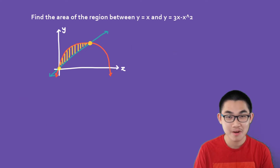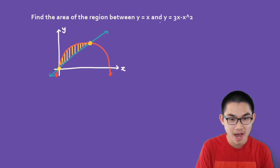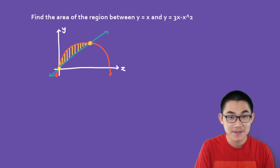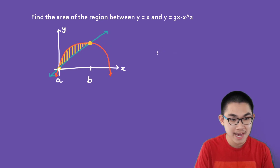Now let's try our first problem. We have to find the area of the region between y equals x and y equals 3x minus x squared. So we know that we have a parabola and a linear equation, and we must find the area between these two curves. The first step is we need to find a and b — in other words, those are going to be the intersections.